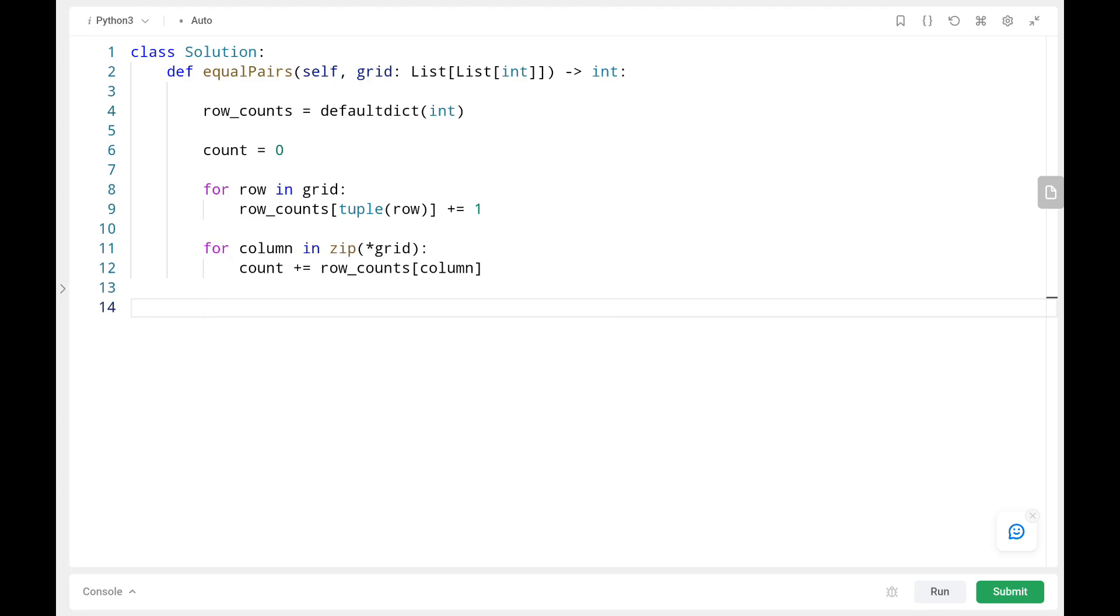Then we need to check whether that particular column exists in our row count dictionary or not. If it is present, then we will increase the count by that particular value that we stored in the row count dictionary. Then finally we will be returning the count variable. That's all the code is. Now we will run the code.